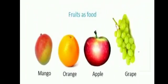Now the fruits. We eat mangoes, oranges, grapes and apples. Fruits of many plants are used as food. Many fruits are eaten raw. Fruits of some plants are also used as vegetables, like brinjal, tomato, pumpkin etc. In some plants, fruits are dried and then they are eaten by us.